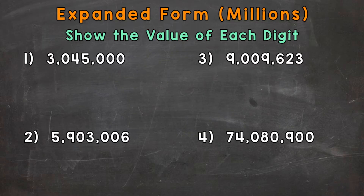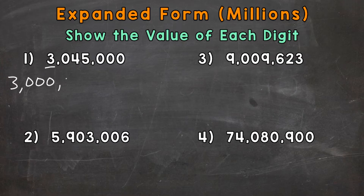Let's jump into number 1, where we have 3,045,000. We want to start with the greatest valued digit, so the digit furthest to the left. In this case, it's going to be this 3 right here. The value of that 3 is going to be 3 million, because it's sitting in the millions place. Next, we have the hundred thousands place, and we have a zero in that place, so we don't have any value to represent within our expanded form. That's a placeholder zero.